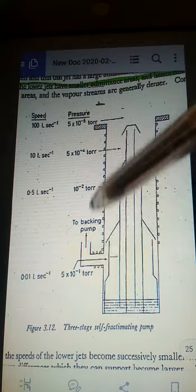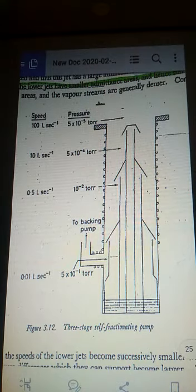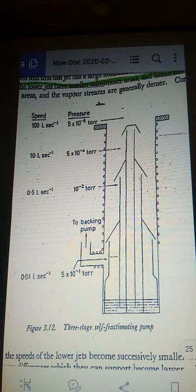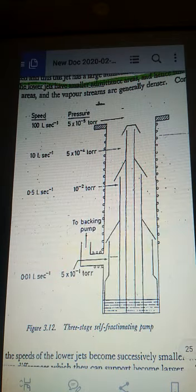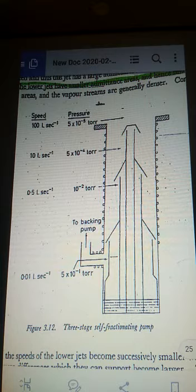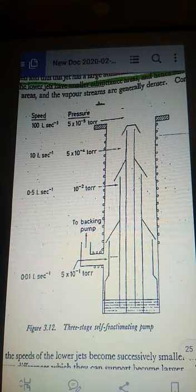The system pressure must be initially reduced below a certain value which in most practical cases is of the order of 10 power minus 1 torr. The pressure below the jet must be kept reasonably low to reduce the probability of back diffusion. To achieve these conditions, the vapor pumps are constructed with several jet stages.